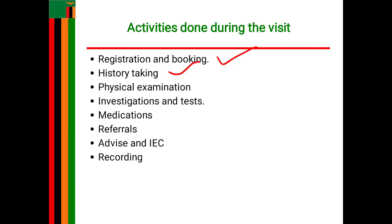The suitable childbearing age is generally between 15 and 45. Mothers who are less than 18 years or above 35 years are prone to a number of risks related to pregnancy. You find out the age so that you know what type of care this woman requires.